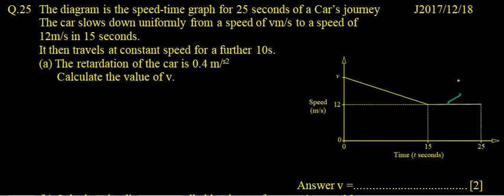This is the constant speed where the time is changed but the speed is not changing. Speed is uniform at 12 meters per second.